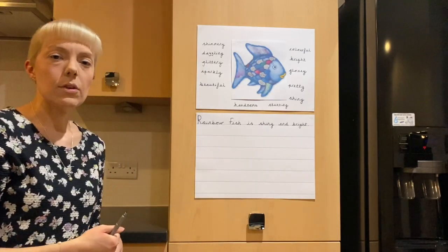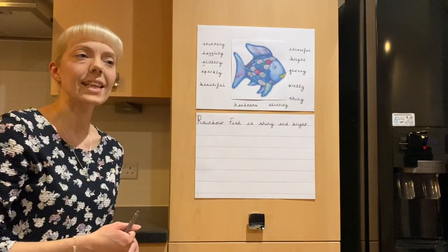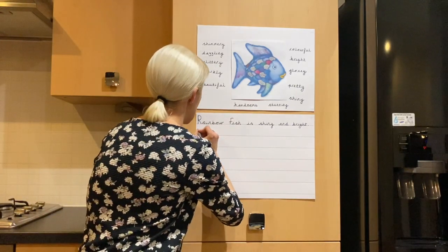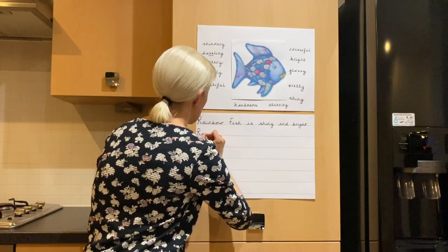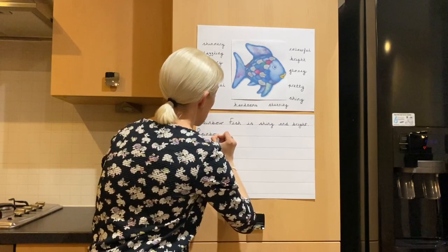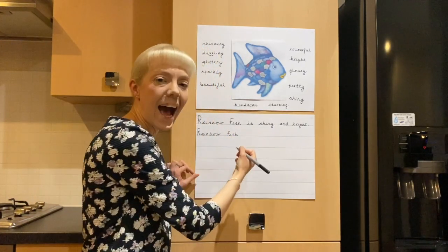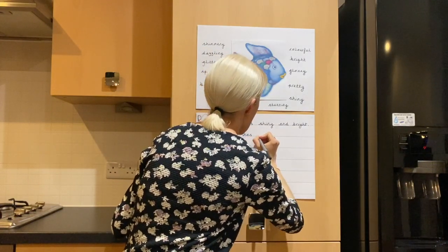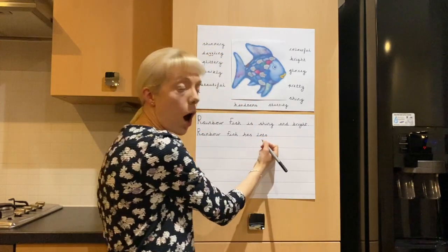Okay, I'm going to think of another sentence now using some more describing words. Rainbow Fish has lots of dazzling and shimmering scales. Can you help me write it? Rainbow — R, A, N, F, O — fish — F, I, SH — has, lots — L, O, T, S — lots of...